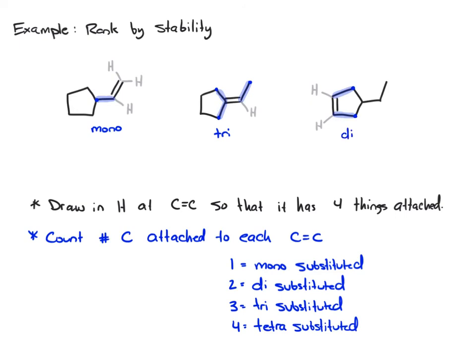So now, just rank these stability-wise based on substitution. The trisubstituted is the most stable, so we'll say that's one. Followed by the disubstituted is number two. And the monosubstituted is three, the least stable.